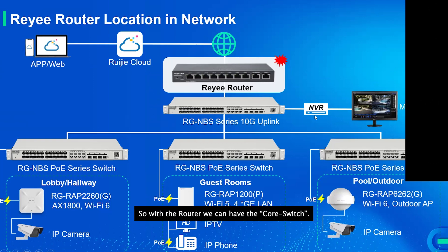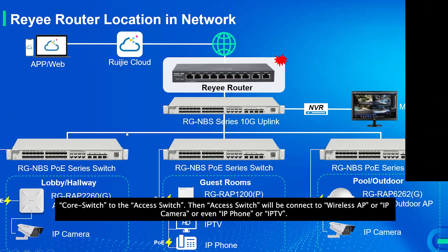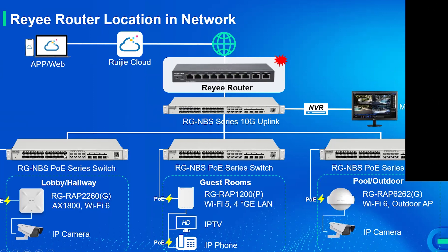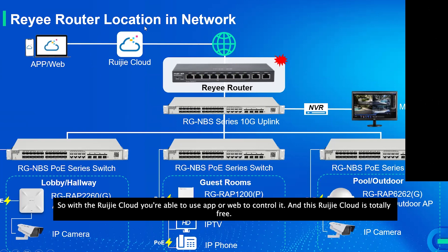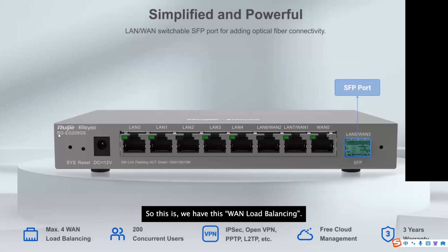Below the routers we can have a core switch, then access switches, which connect to APs, IP cameras, IP phones, and IP TVs. Using Reyee Cloud you're able to use the app or web to control everything, and Reyee Cloud is totally free.